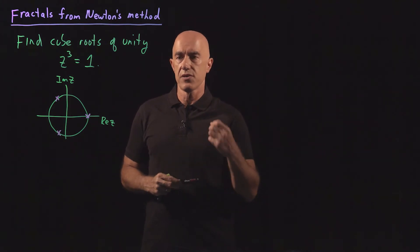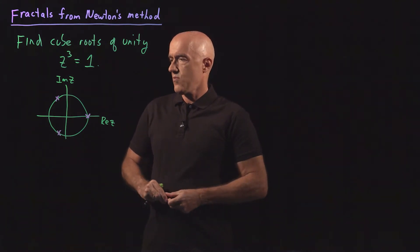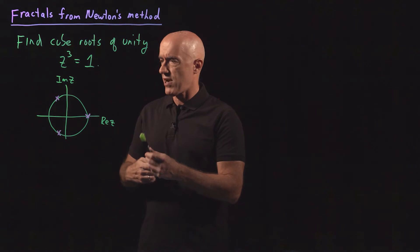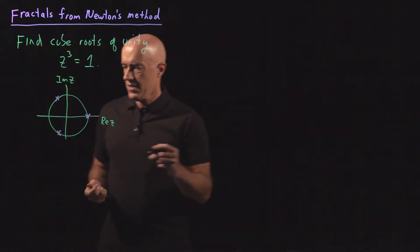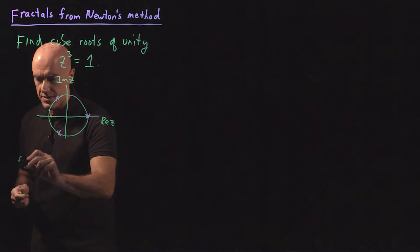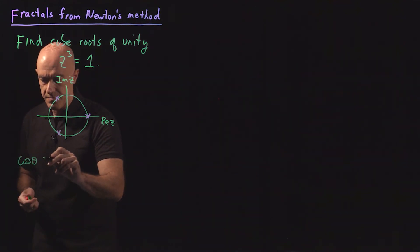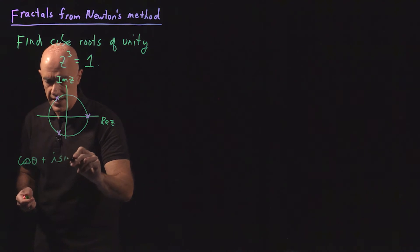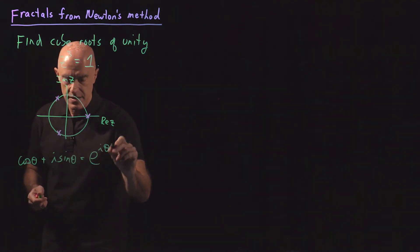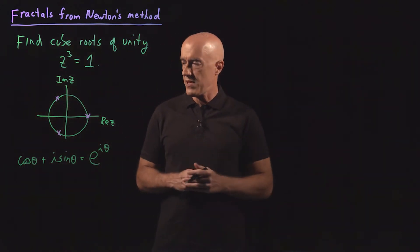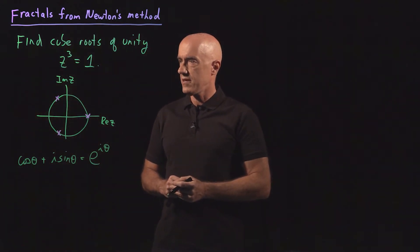So those are the three cube roots of unity. We can find an expression for them if we use Euler's formula. So Euler's formula is cosine theta plus i sine theta equals e to the i theta, so a complex exponential function. So how do we use Euler's formula here?